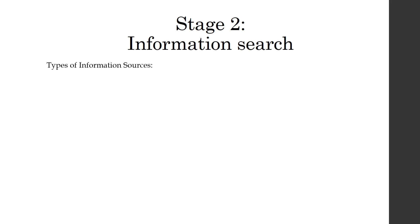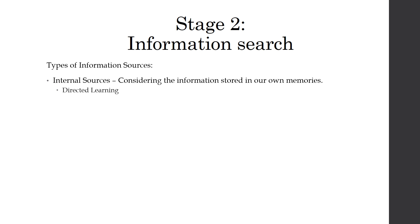There are different types of information sources worth noting — where you get your information. You can get information stored in your own memory, which is called an internal source. Some stuff pulled from memory comes from what we call directed learning — you consider information from a previous search. You're thinking of making a purchase, you remember the last time you looked, you saw this or that, you liked this but didn't like that. You searched before, and now you're applying that information.